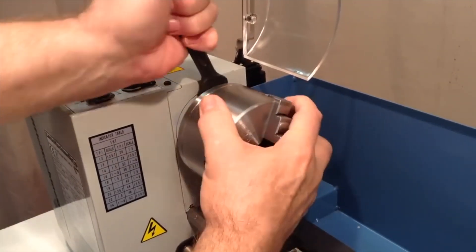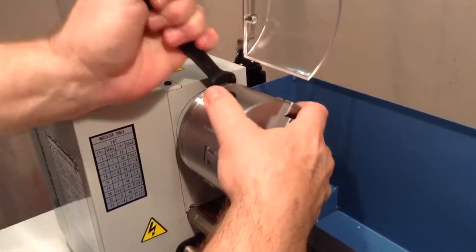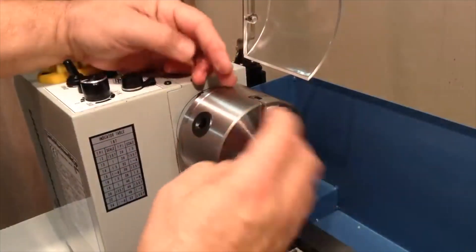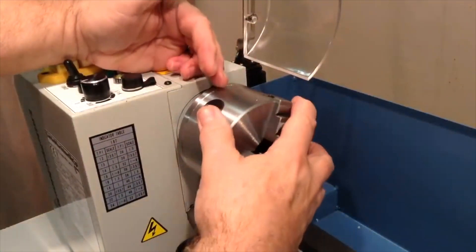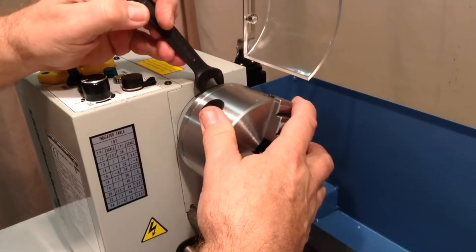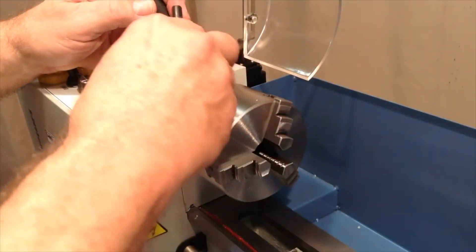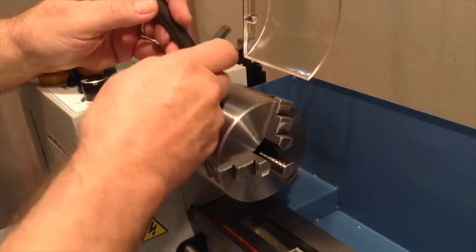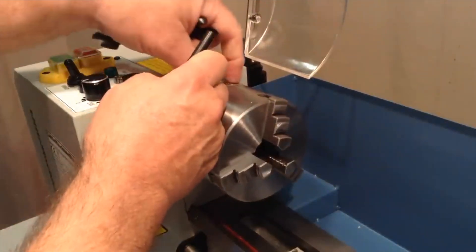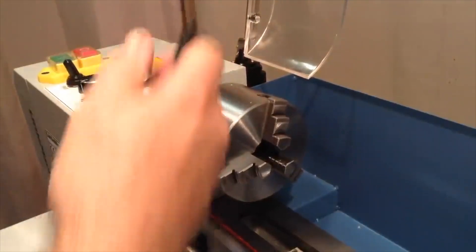You just loosen those maybe a quarter turn and once they're loosened just spin them off. But let me mention that when you first get your lathe from the factory it's typical that these nuts are very very tight, and you are very likely to have to use the chuck key in place to hold the chuck while you gain extra leverage to loosen these nuts for the first time.